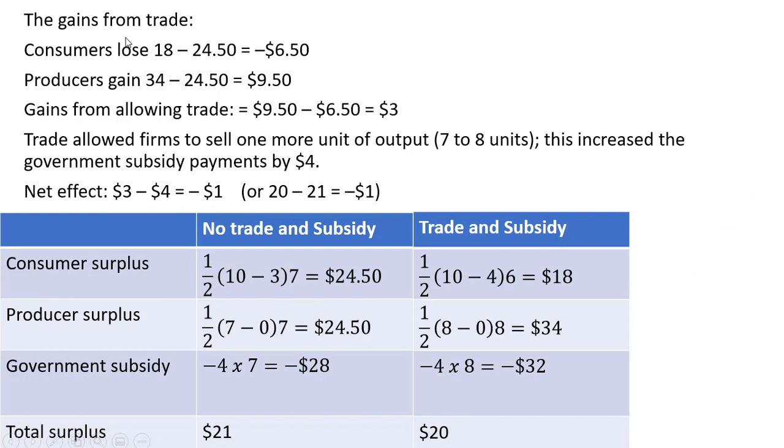There are gains from trade here. Consumers allowing trade do lose. They're paying higher prices and not buying as much. So consumers lose $6.50 of consumer surplus, but producers gain. The producer surplus goes from $24.50 to $34 or $9.50 increase. So allowing trade has a net benefit here of $3.00. The gains to producers outweigh the losses to consumers, but that's not the end of the story.